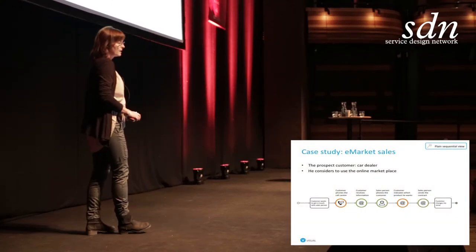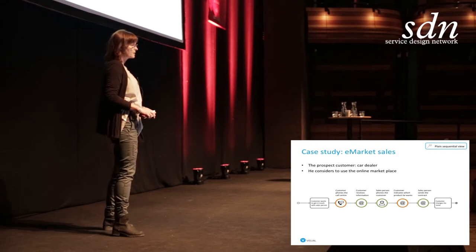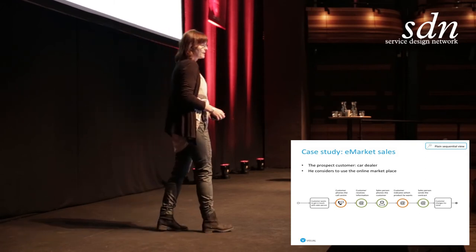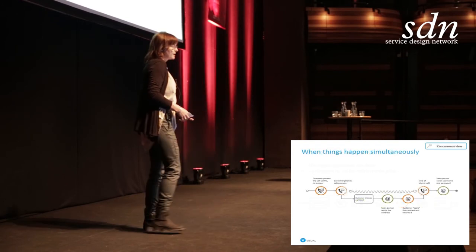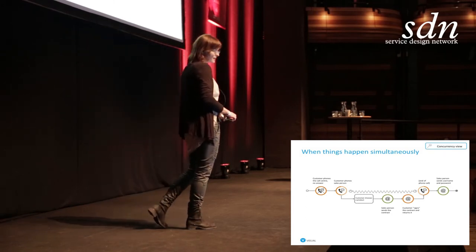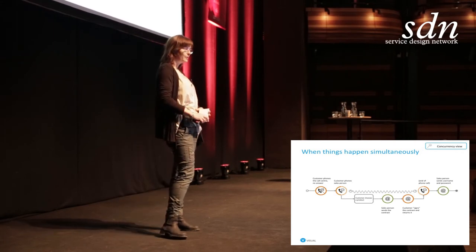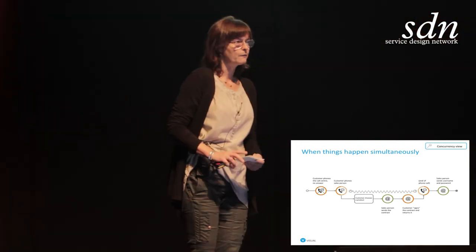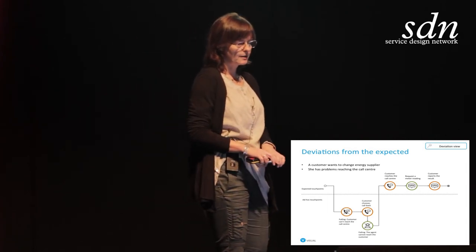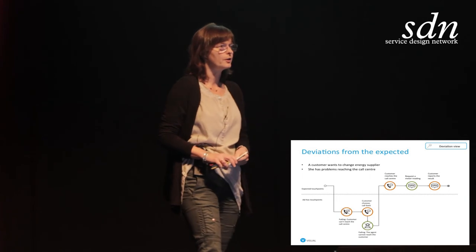Here's a real case study — a sales process where the customer phones into the call center, receives information by mail, and a salesperson contacts the customer right after. There are some emails going back and forth, and in this case the customer changes his mind, and there is no contract. Sometimes things happen simultaneously, so we developed a concurrency view. After one failing attempt, the customer phones the salesperson, and while they are having their conversation, emails are sent back and forth with a contract, and it is signed and returned. Finally, we have a deviation view for a transactional service, where the visualization is split with unexpected or ad hoc touchpoints shown below the horizontal line — illustrating a customer struggling to get in contact.